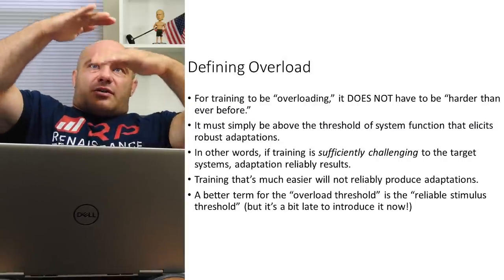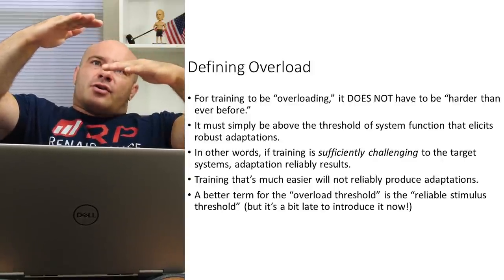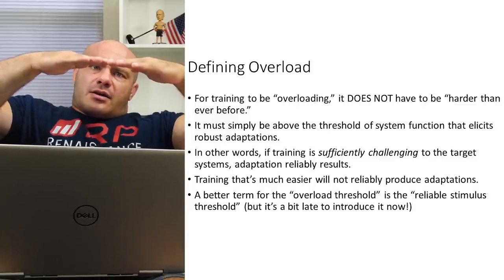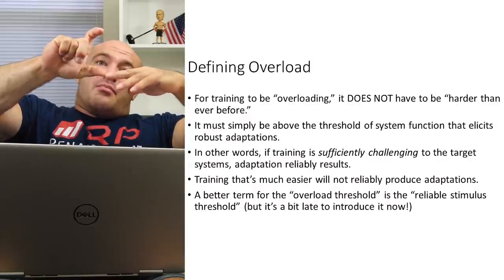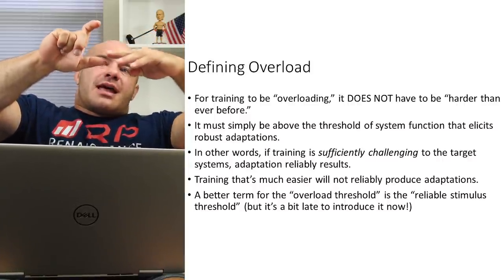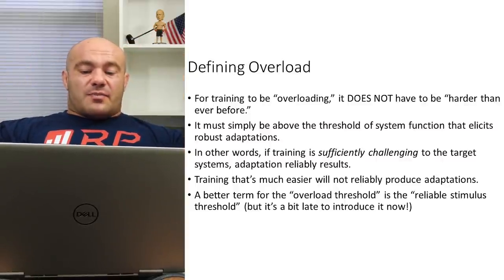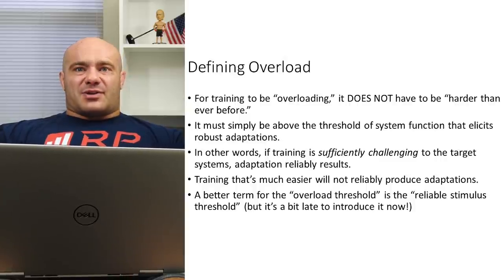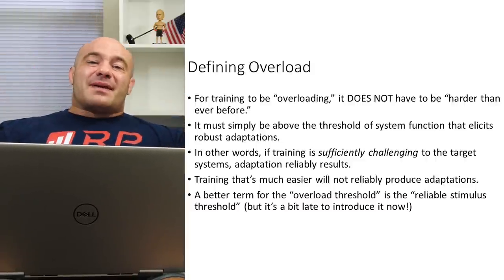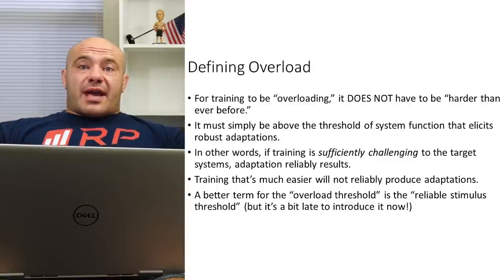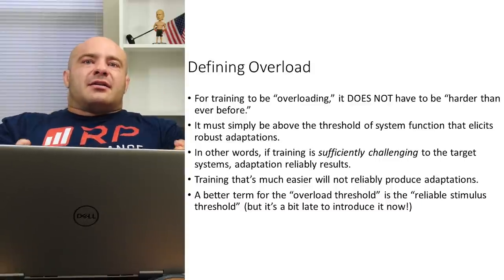A better term for the overload threshold is 'reliable stimulus threshold.' There's a spectrum from easiest to the most you can possibly do. The overload threshold is some point that gives us an overload window above it, all the way up to maximal. Within this range, things are sufficiently challenging to promote adaptations. Anything below it may not reliably cause adaptations. So if someone can potentially lift the 20s for sets of 10, giving them the 5s probably won't reliably cause muscle growth.